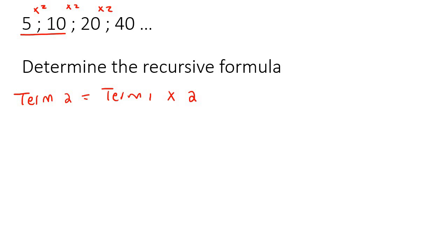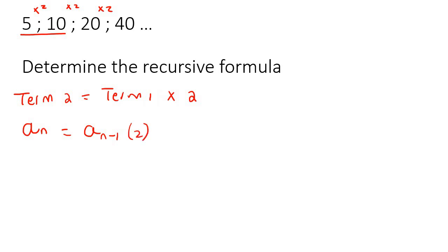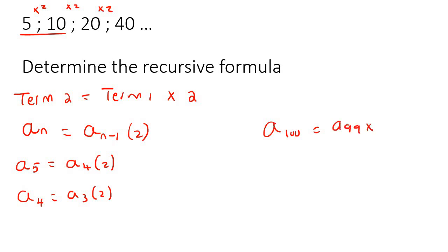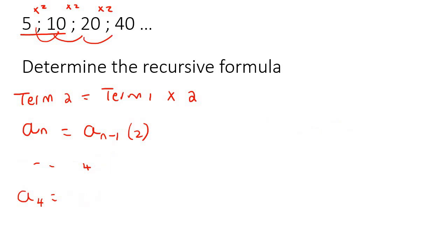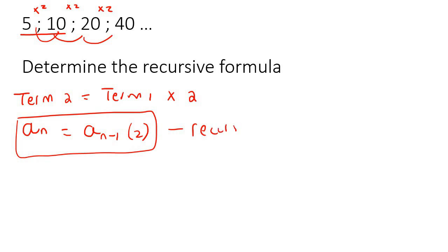Now I'll turn it into the normal notation we normally use. We could say term n is equal to the term just before it. So if you're looking at term 2, then that previous term would be term 1 — so if this is term n, then this must be n minus 1 — and then we multiply that by 2. So term 5 would be term 4 multiplied by 2, term 4 would be term 3 multiplied by 2, term 100 would be term 99 multiplied by 2. That formula — term n equals term (n−1) times 2 — is called the recursive formula.